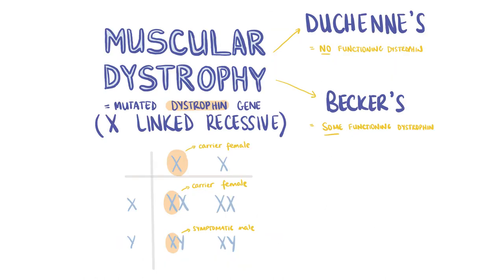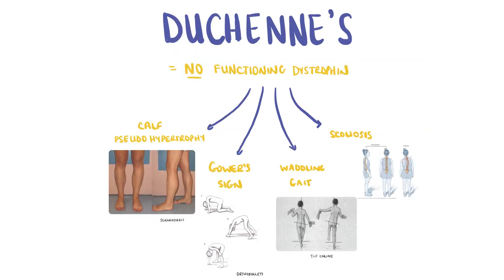Now let's talk about muscular dystrophies. Muscular dystrophies, such as Duchenne's and Becker's, are inherited myopathic disorders caused by genetic mutations of the dystrophin gene. They are X-linked diseases, therefore they usually only affect males. Duchenne's is the most severe form of muscular dystrophy, as there is no functioning dystrophin formed. Patients with Duchenne's will have classical examination signs, such as calf pseudohypertrophy, where fat replaces the calf muscle.